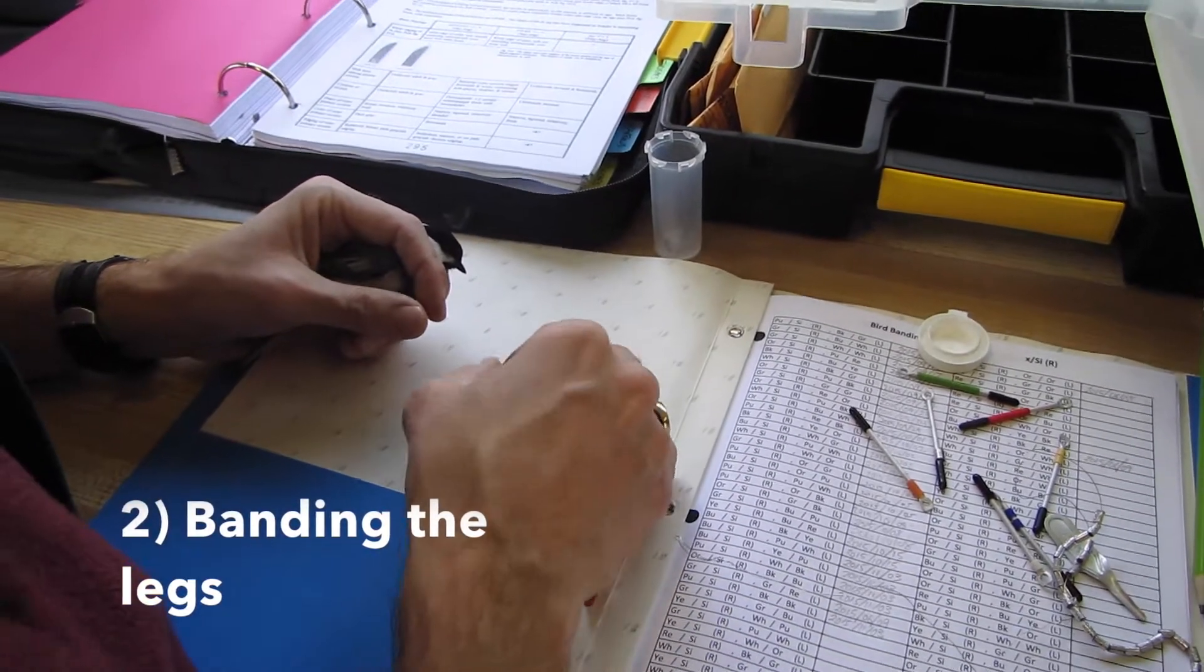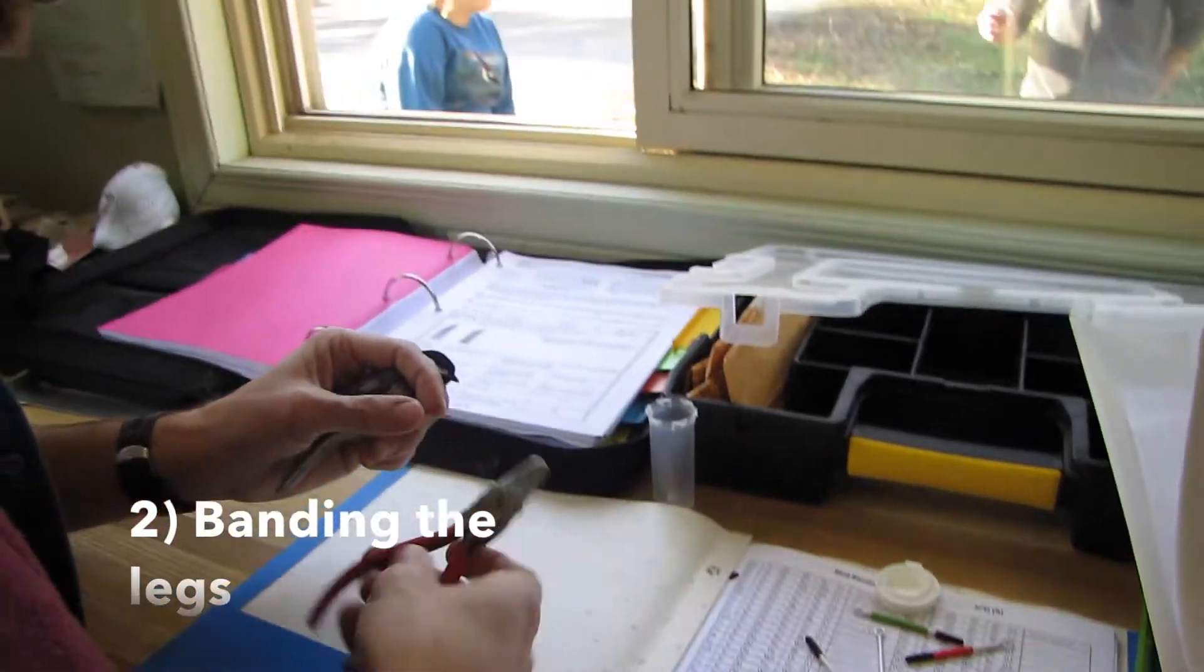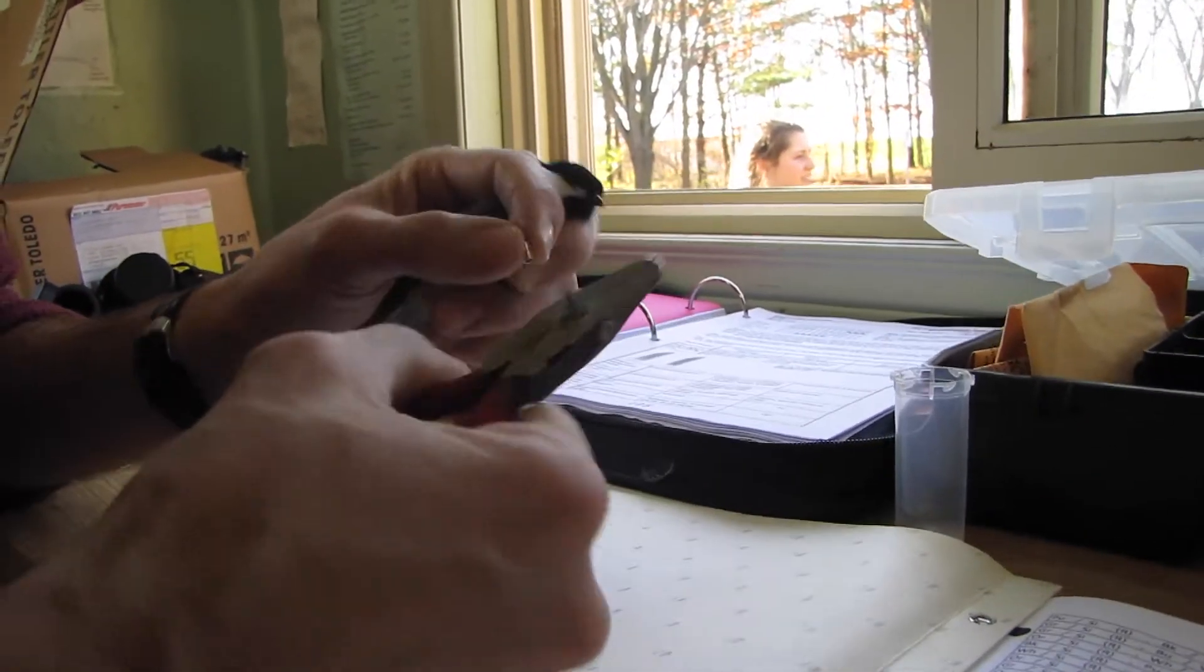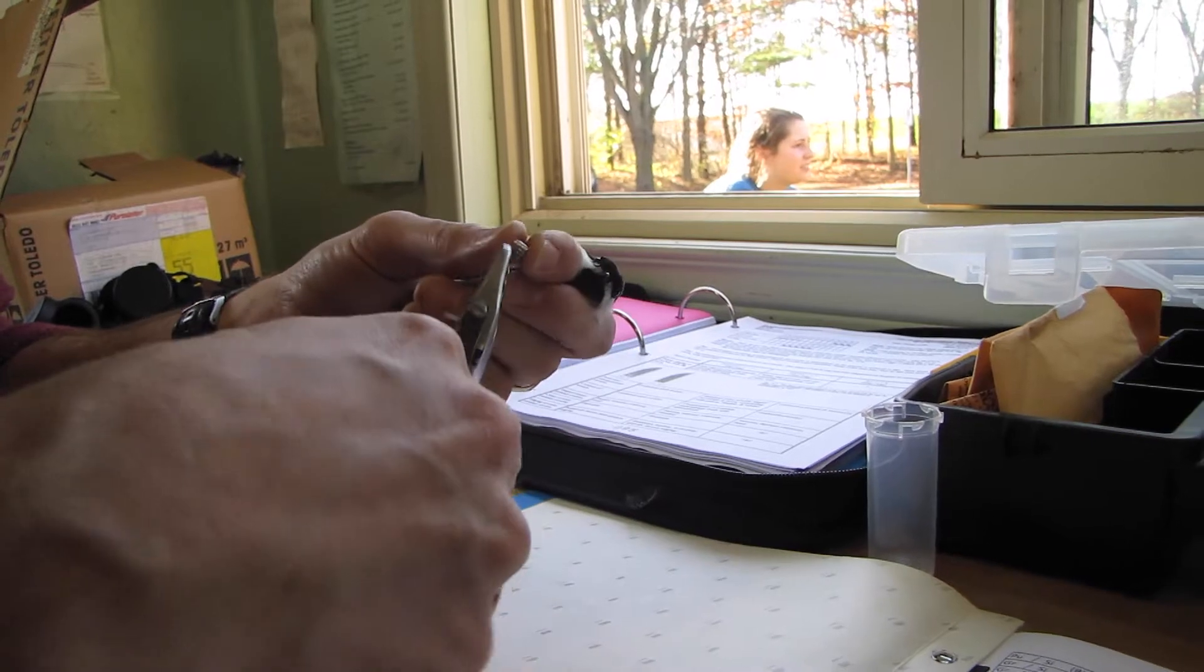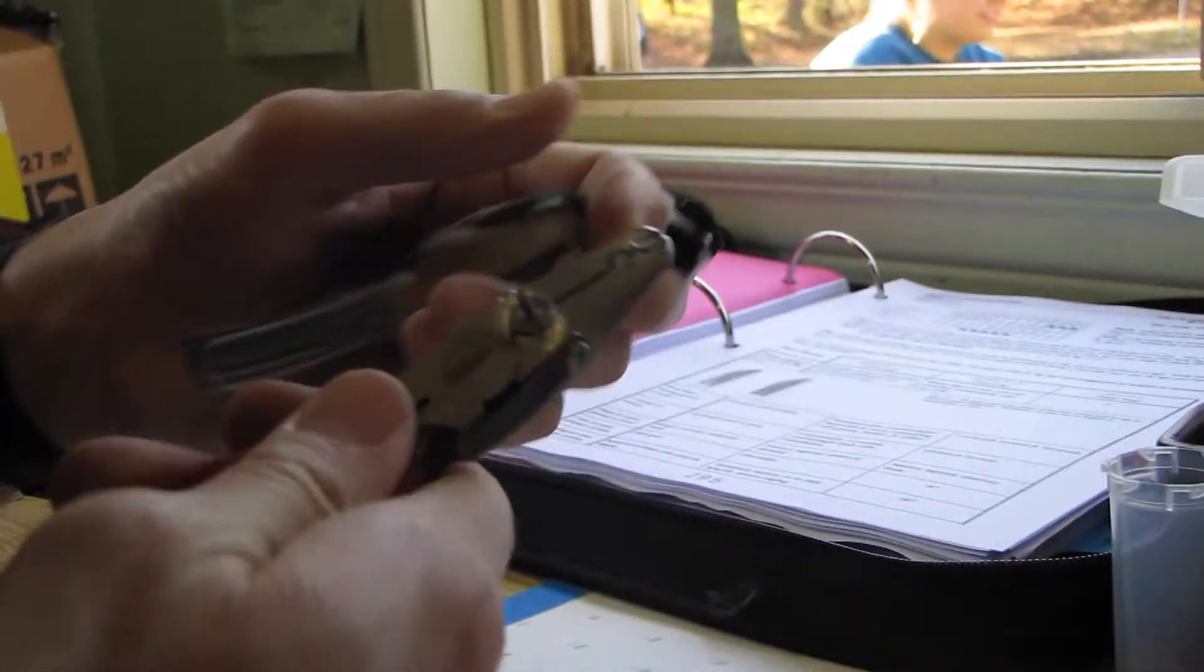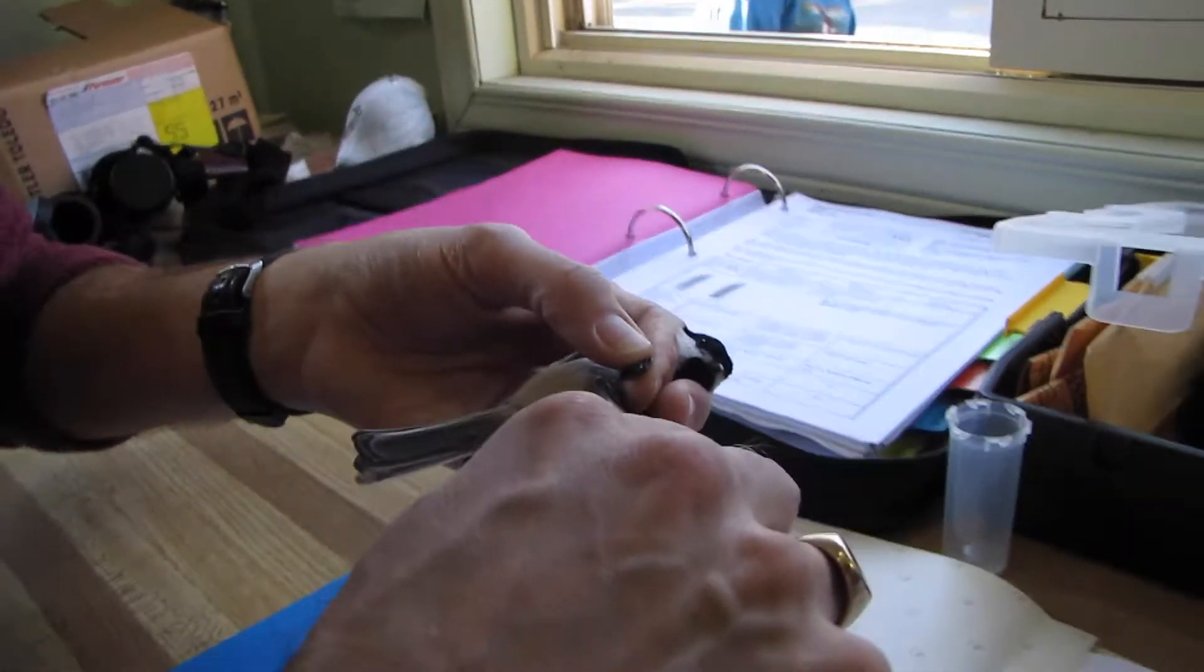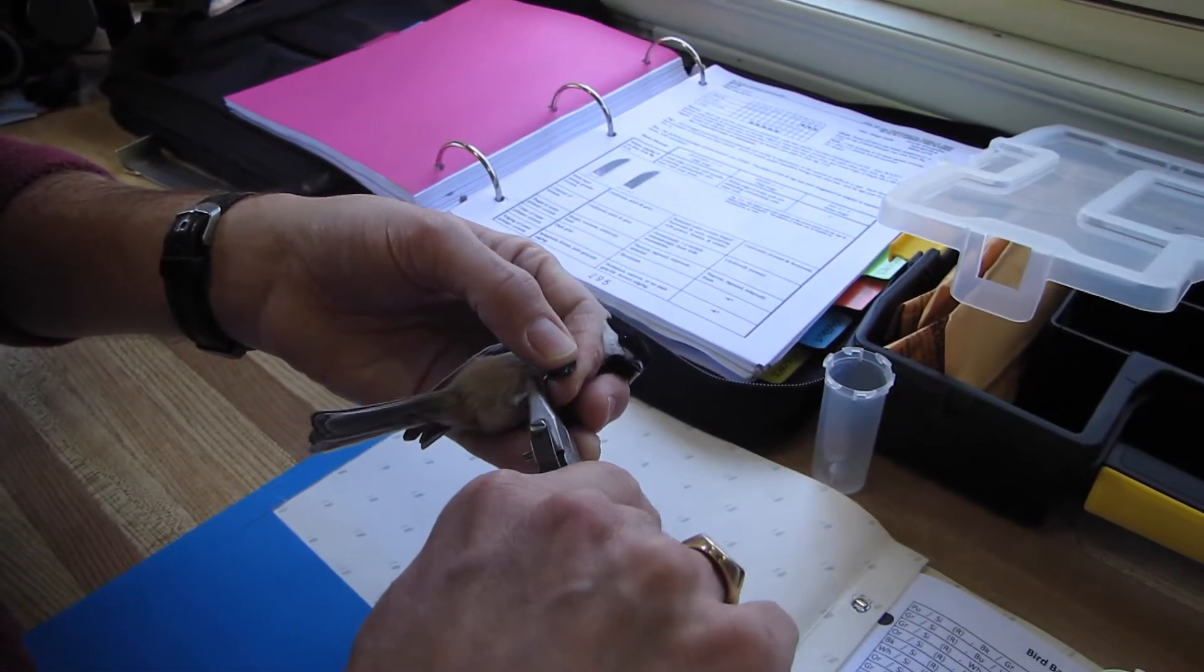Put the band on the post. Open up the band. And then they go in these pliers so that you can't crush the band farther than you're supposed to. And we put it on the right leg. Put it right there on the right leg. And shut it.